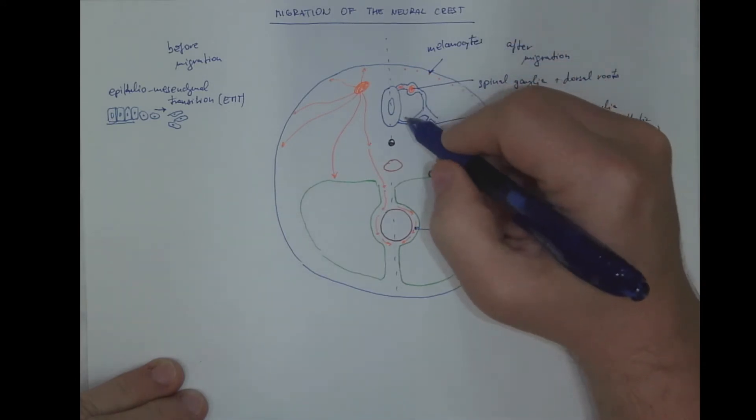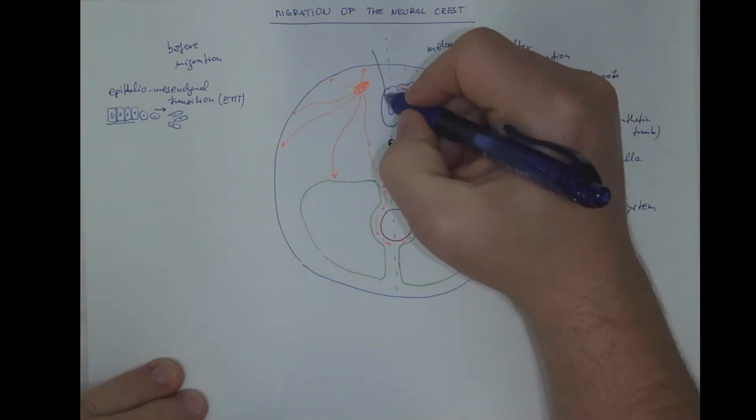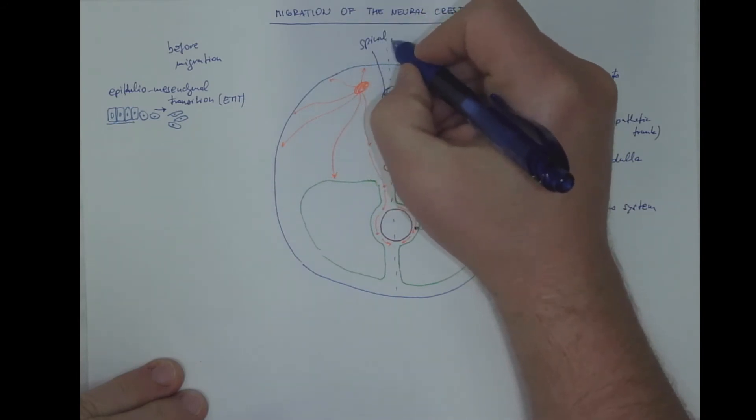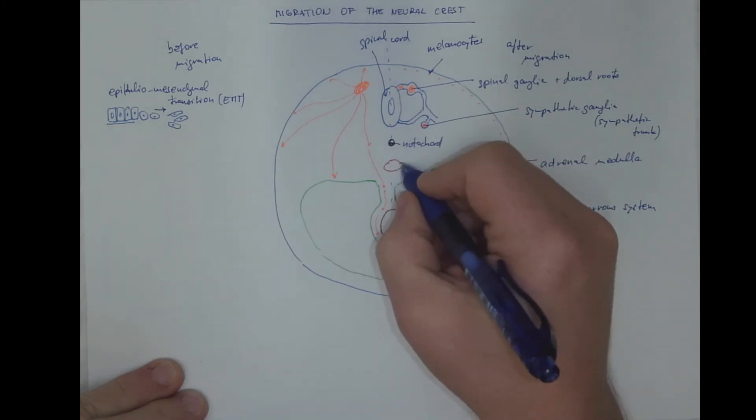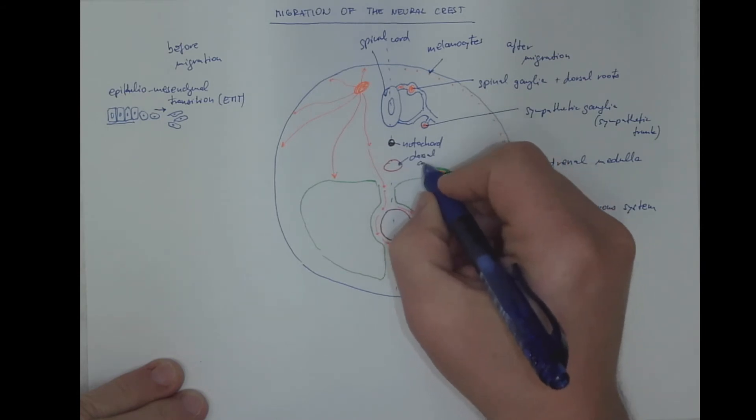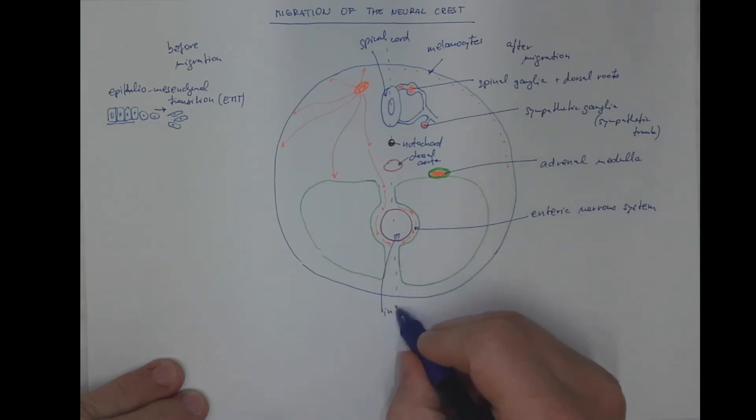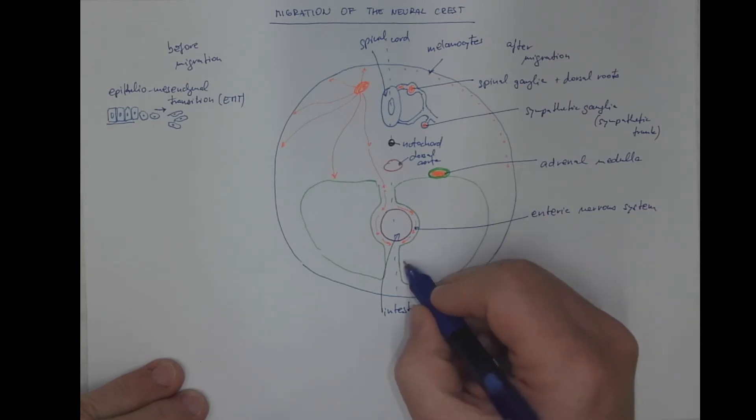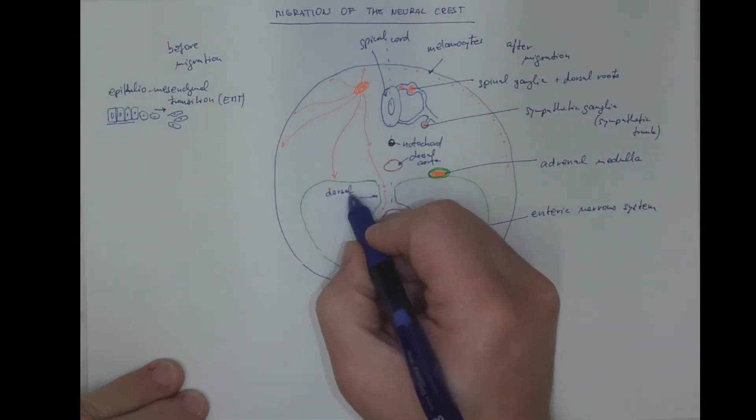Sitting on the junction between the dermis and epidermis. I will label other structures. It's the spinal cord here, the notochord, the dorsal aorta. This is the intestine. This is the ventral mesentery, dorsal mesentery. This is the celom cavity.